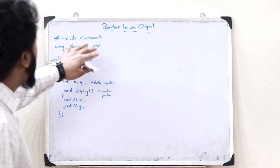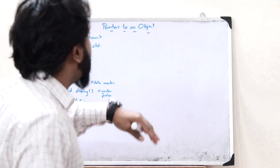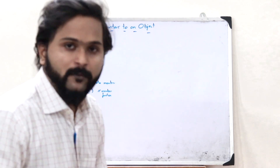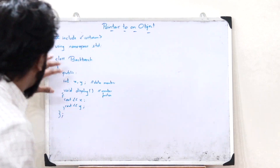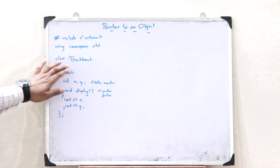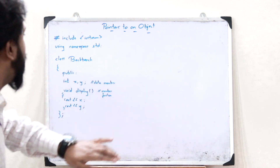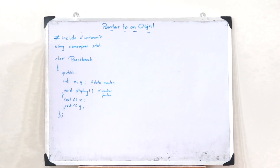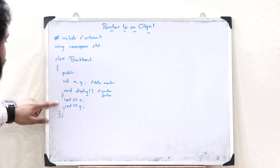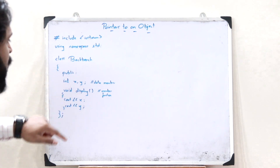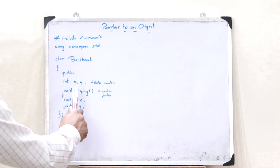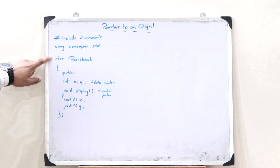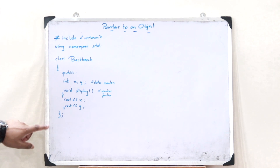Let us see how a pointer can be incorporated into the concepts of classes and objects. Let us assume this particular class — say class Backbench. Here I have two data members X and Y, and here I have a member function void display to display these two data members X and Y. This is a typical example of a class.